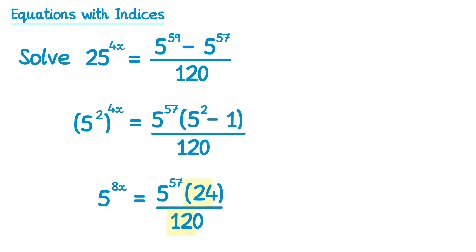Now if you look at the 24 and the 120 as just a fraction — 24 over 120 — this actually simplifies. 24 is a common factor of both, so it simplifies to 1 fifth, or 1 over 5. So we can rewrite the right hand side much more nicely. We have 5 to the 8x on the left, and the right hand side is 5 to the 57 times a fifth, or divide by 5.